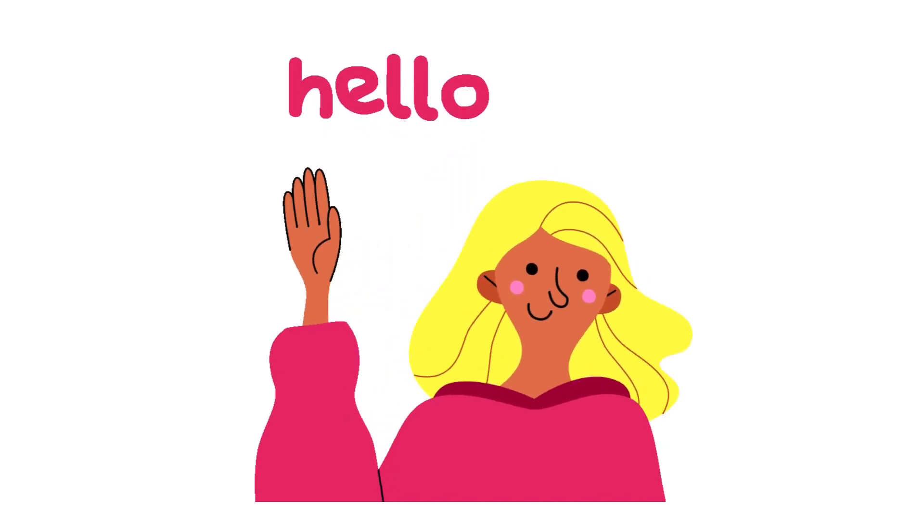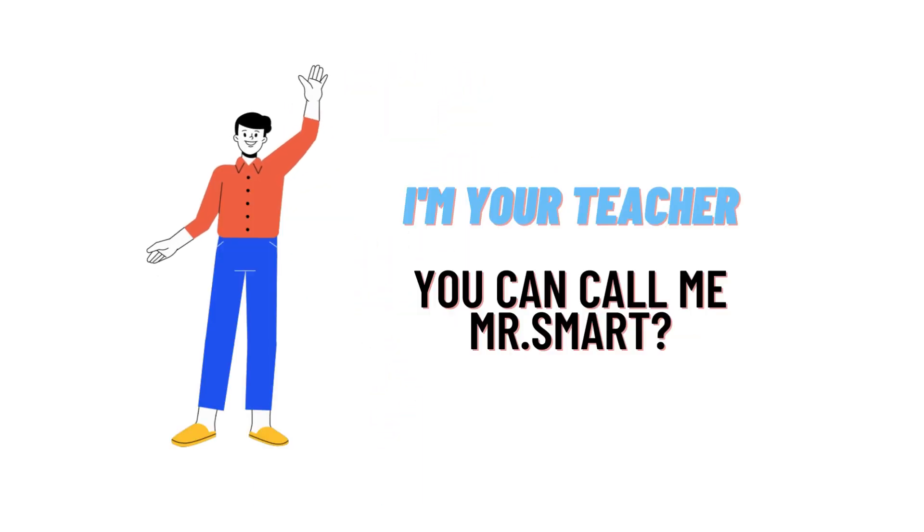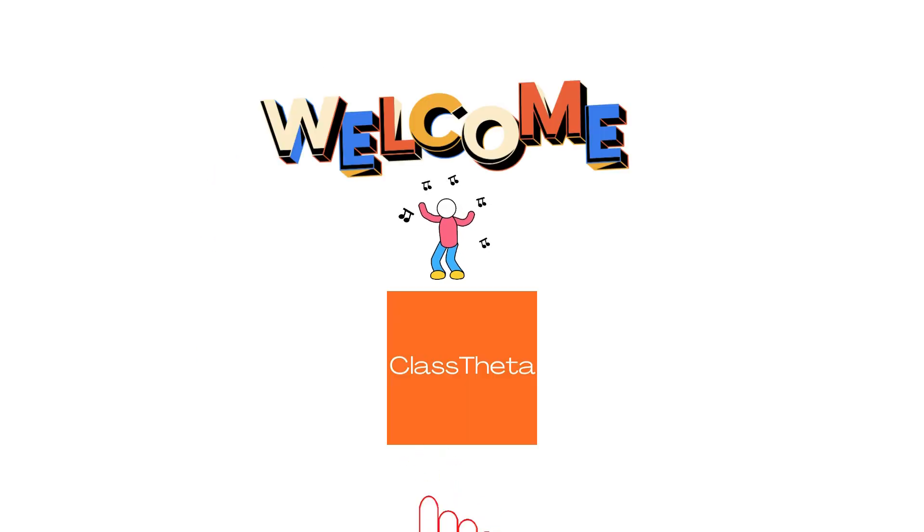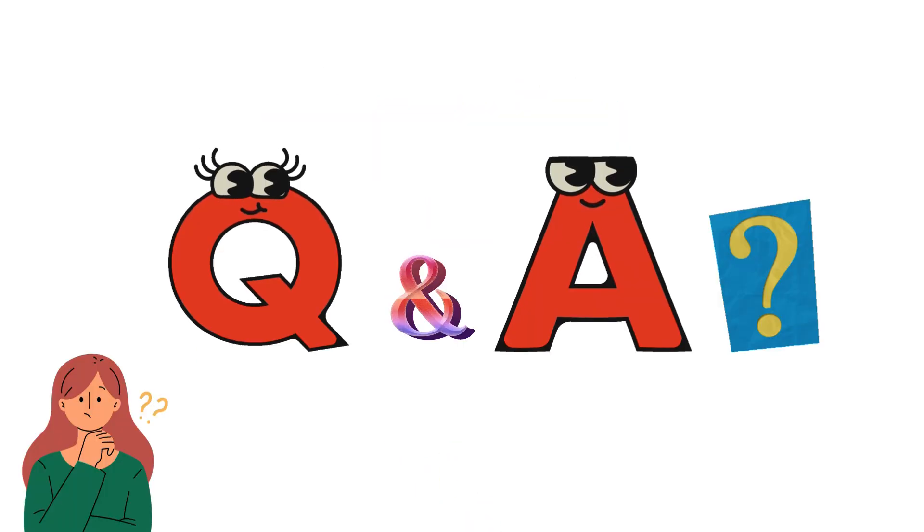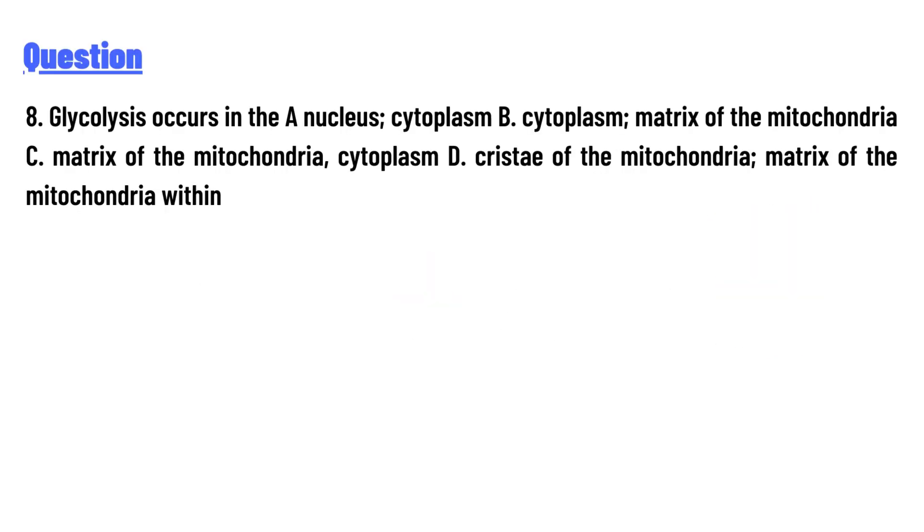Hello everyone, how are you? I am Akrash, your teacher here, and I will teach you different questions and their answers. I welcome you to ClassTheta.com. Today's question is: Glycolysis occurs in the A. nucleus; cytoplasm B. cytoplasm; matrix of the mitochondria